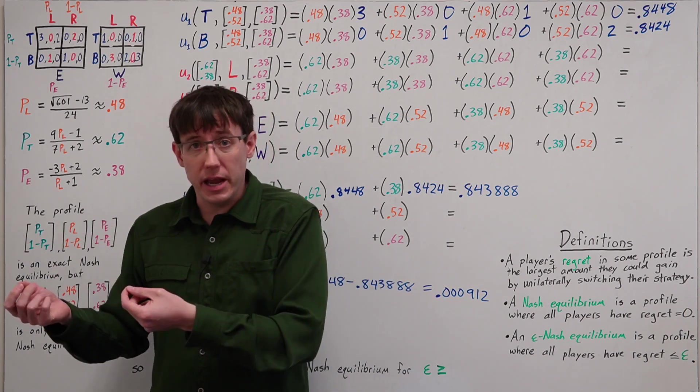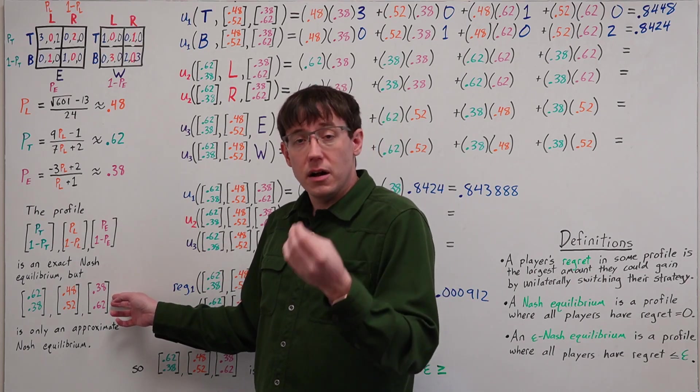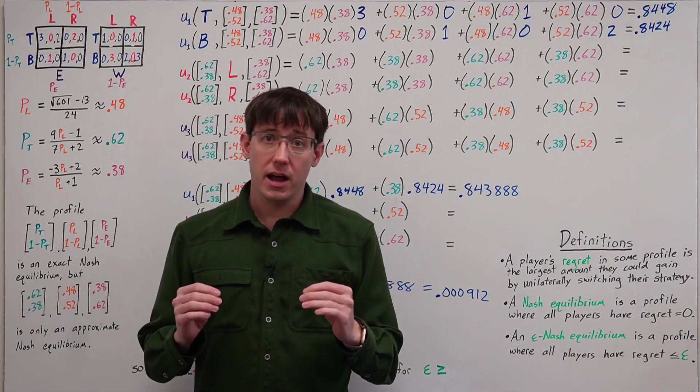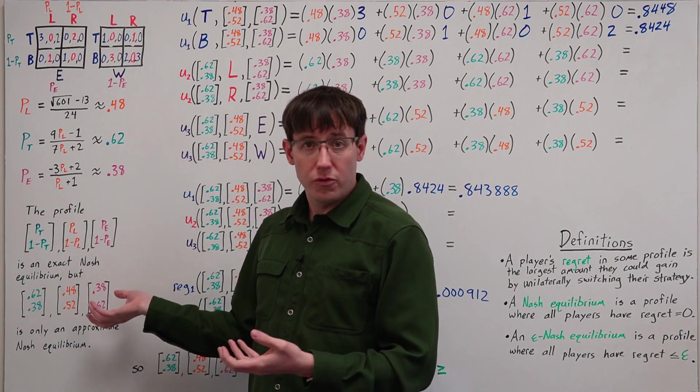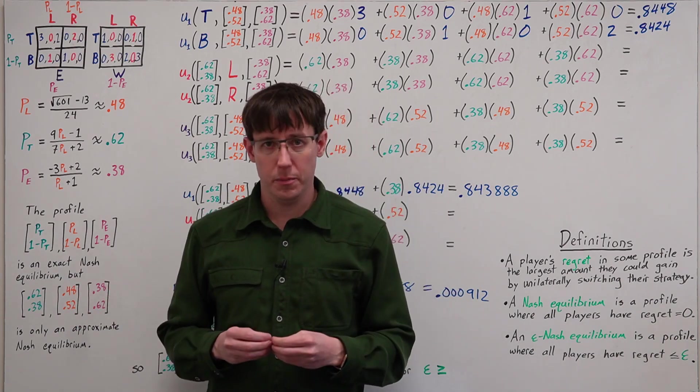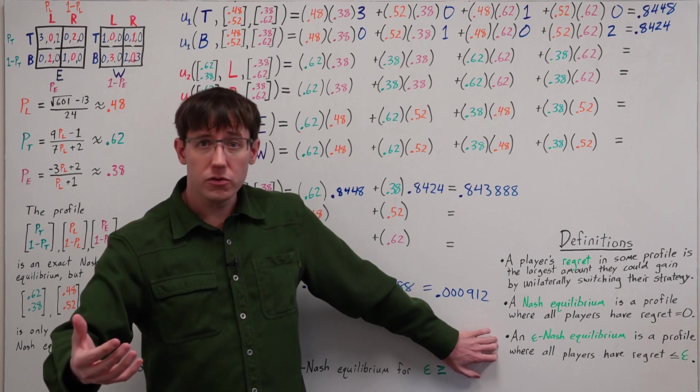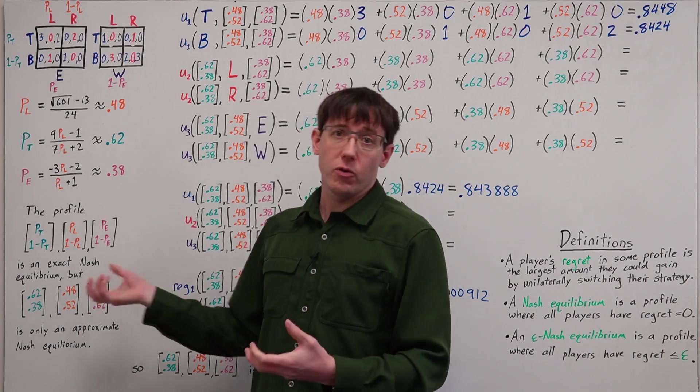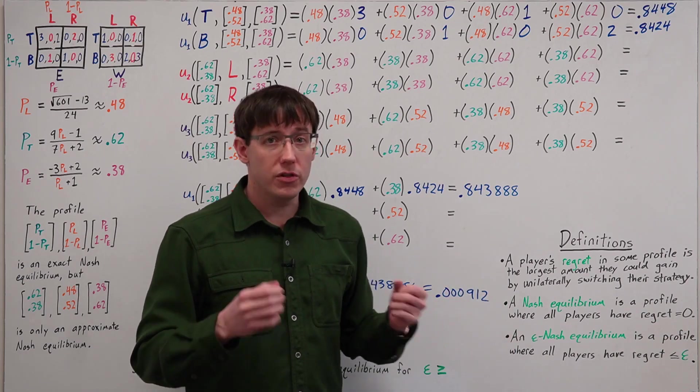And thus, the idea of an epsilon-Nash equilibrium is, if all players have very small incentive to deviate away from some profile, then that profile is approximately a Nash equilibrium. So our goal now is to figure out, across all of the players, what is their regret for this profile. And the largest regret any of the players has will tell us the epsilon for which this profile is an epsilon equilibrium.